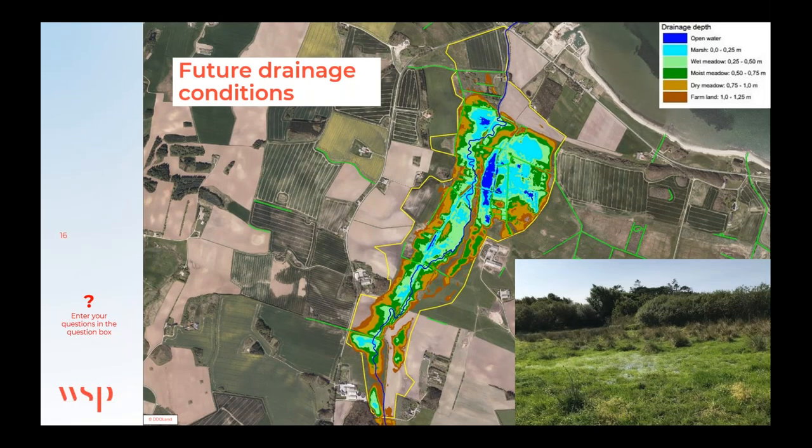After the initial design is completed, we model the future hydrology based on the design and historical water flow data. This is done using the future hydrological model results for various stream flows and the available digital terrain model to show future surface water levels. In this example, much of the area is colored blue and light green, meaning the area is now much wetter. Dark blue indicates water at the surface; light blue indicates water within 25 centimeters of the surface. The goal is raising the water table close to the terrain and creating wetlands.